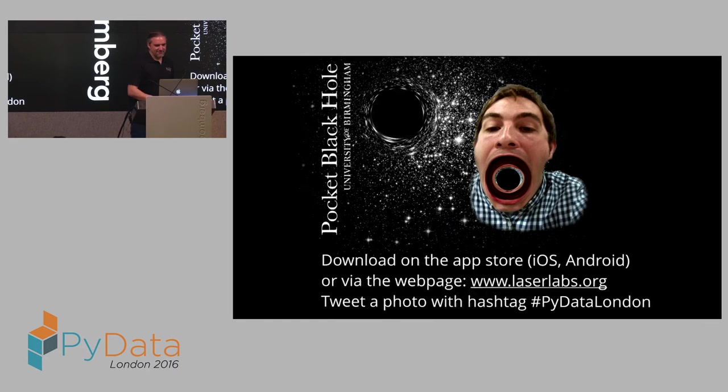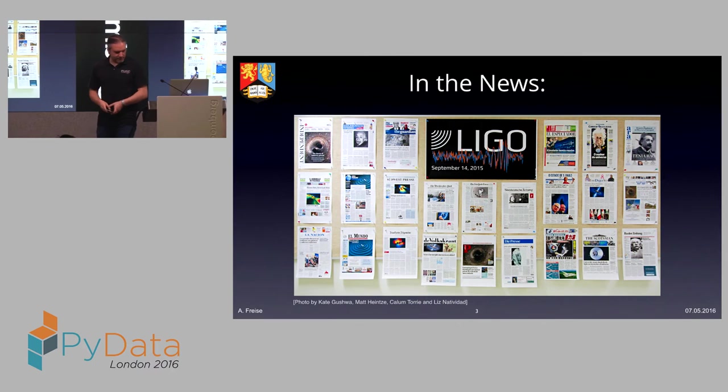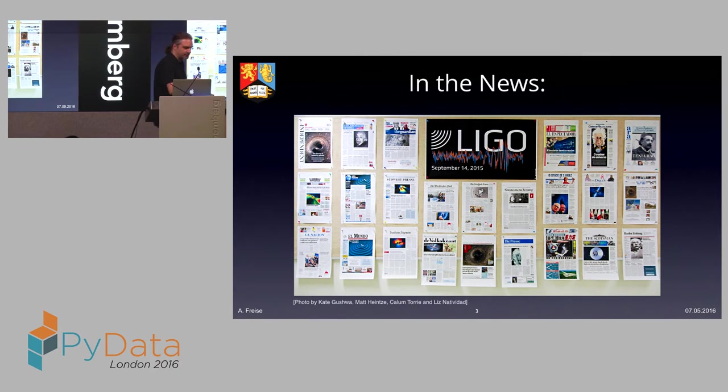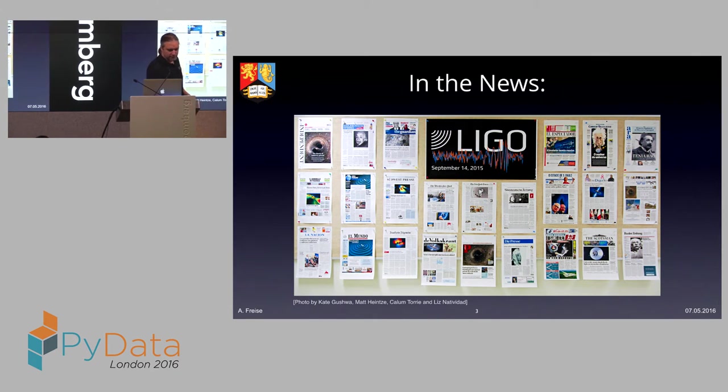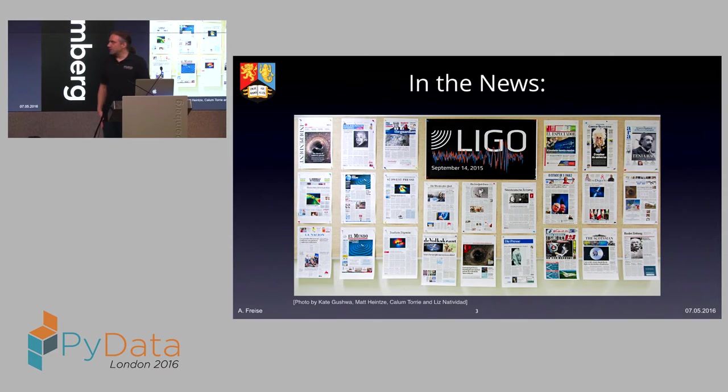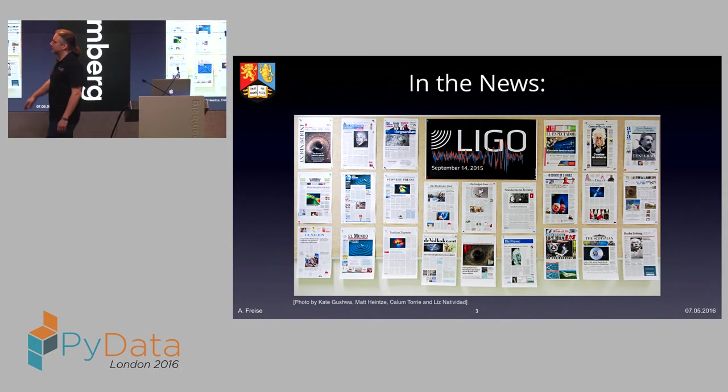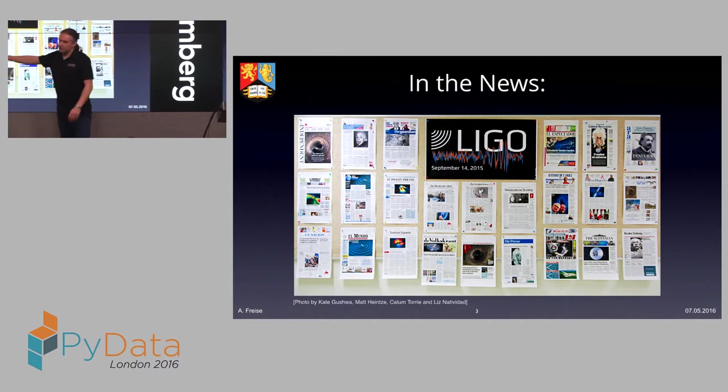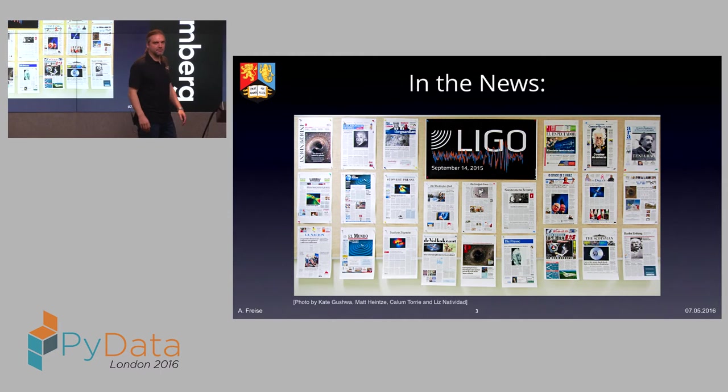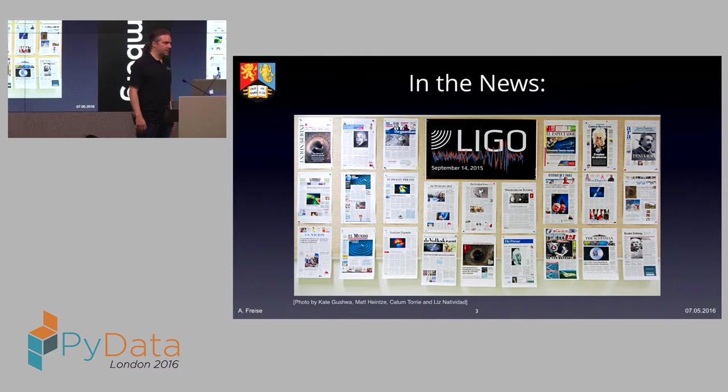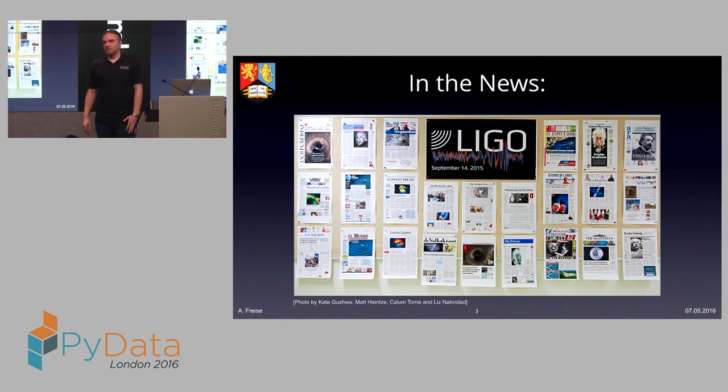So why am I here? I work for the LIGO project, and we have been in the news. Earlier this year, on the 12th of February, these newspaper front pages are from the 12th of February. We've been on the front page with the science project almost everywhere on the planet. So that's a bit unusual. Why was that?